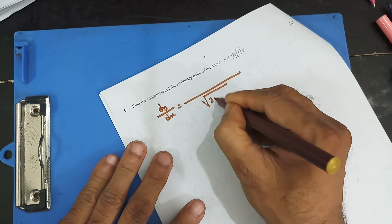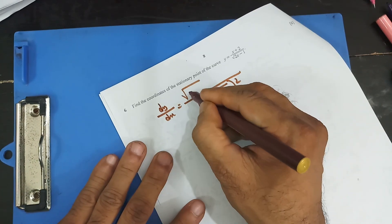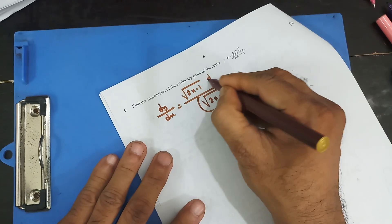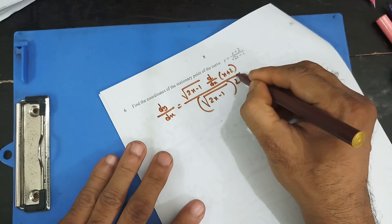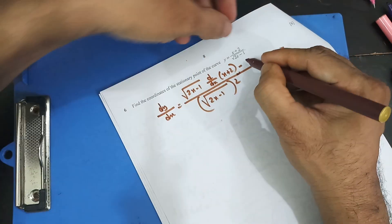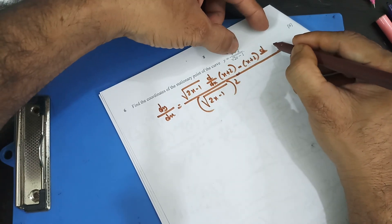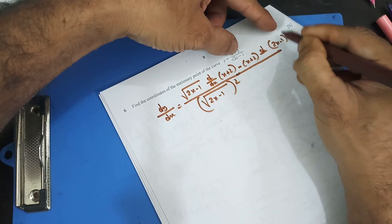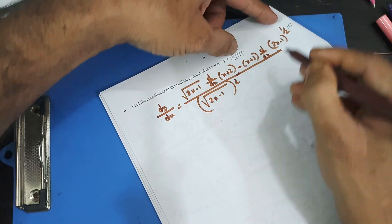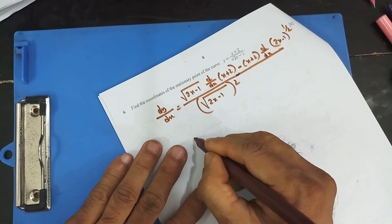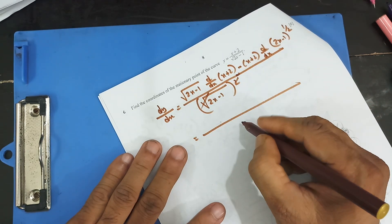So the denominator is (2x − 1) whole square, and on the top it's going to be (2x − 1) times d/dx of (x + 2), then minus: keep (x + 2) and differentiate the square root — writing the square root as power half — so that's going to cross out on the denominator.